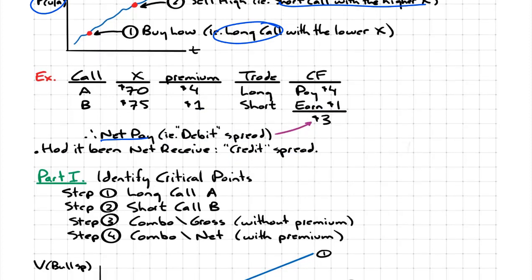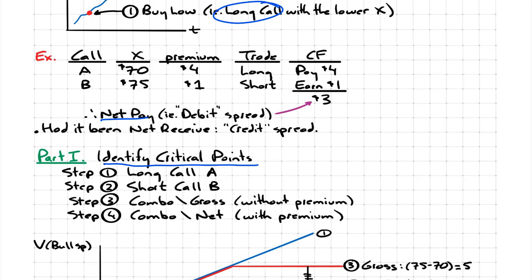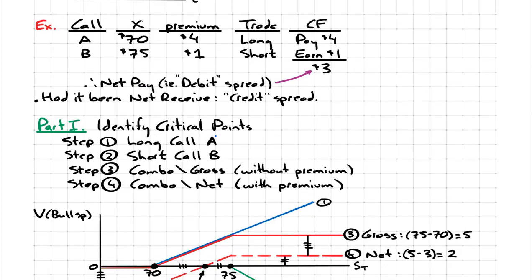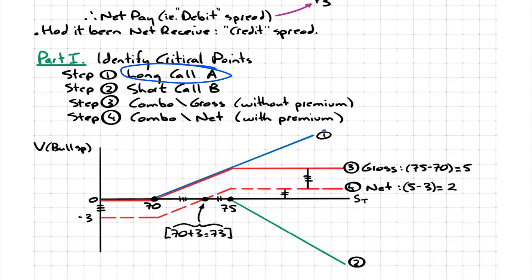In part one, we want to identify the critical points in this strategy. There are three: what's the most we can make, what's the most we can lose, and what's the break-even price? I approach this with a step-by-step, ground-up philosophy, looking at the profile for each individual component. Let's start with the long position in call A, represented by line one here.